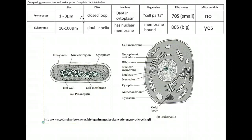In prokaryotes, the DNA is found in the cytoplasm. In eukaryotes, it's found within the nuclear membrane, inside the nucleus. For prokaryotes, we call the organelles 'cell parts' because they're not membrane-bound, whereas in eukaryotes they're membrane-bound organelles. Ribosomes in prokaryotes are 70S — they're small — whereas in eukaryotes they're 80S and larger. Prokaryotes don't have mitochondria, but eukaryotes do.